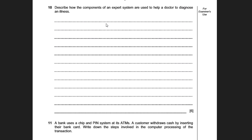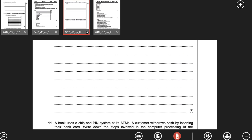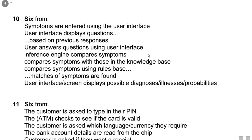It would be diagnosing the illness and probably putting together some prescription. This prescription, or possibility of illnesses, would then be output to the screen. What you're looking for here is four marks for the components and two marks where you put them into context. Looking at the exam board's answer: symptoms are entered using the user interface; the user interface displays questions based on previous answers; the inference engine compares the symptoms with those in the knowledge base; and possible diagnosed illnesses are displayed.